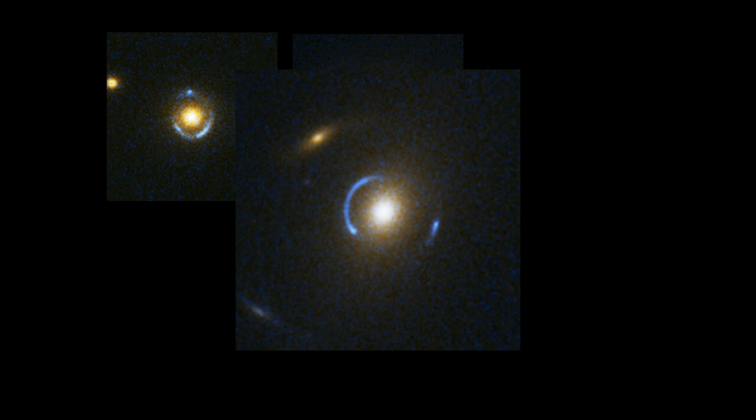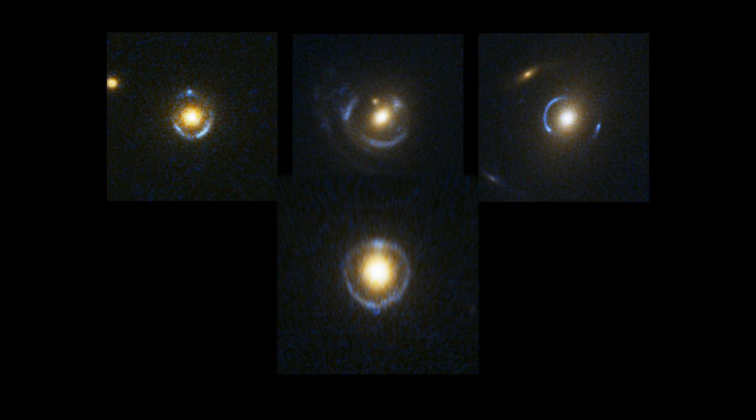Or, if everything is perfectly aligned, we see a ring of light encircling the huge galaxy in the foreground. These perfect rings, known as Einstein rings, are so rare that only a few handfuls have ever been observed in visible light.